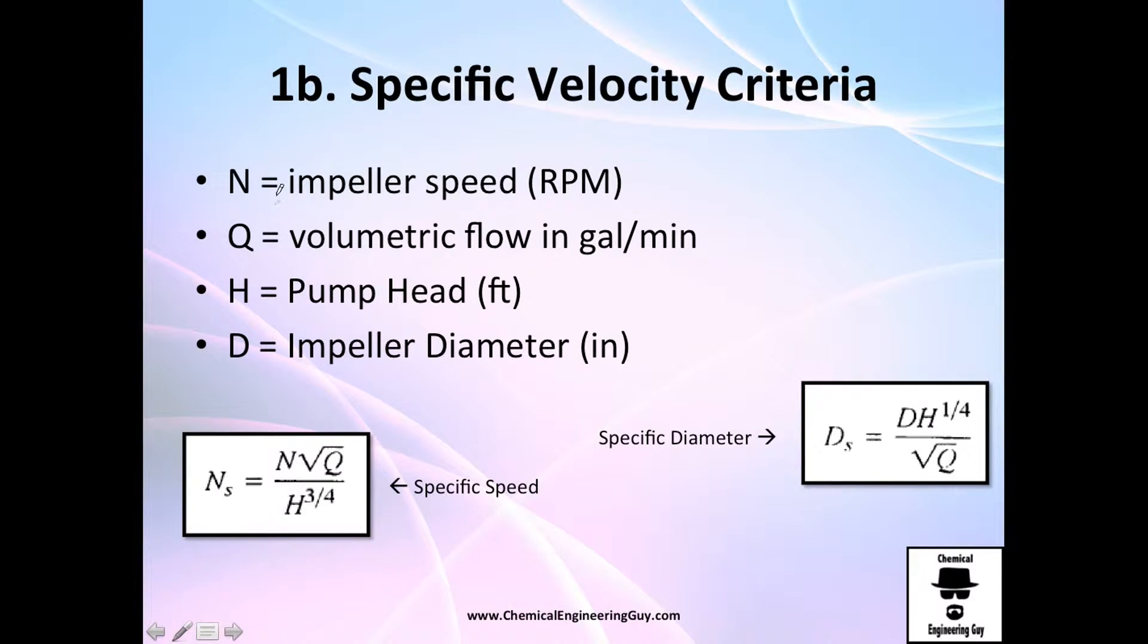So recall, N is the impeller speed in revolution per minute, Q is the volumetric flow in gallon per minute, H is the pump head in feet, and D is the diameter of the impeller in inches. The equation for specific speed is N times the square root of the volumetric flow rate divided by H to the three-fourth powers. And this one goes for specific diameter.